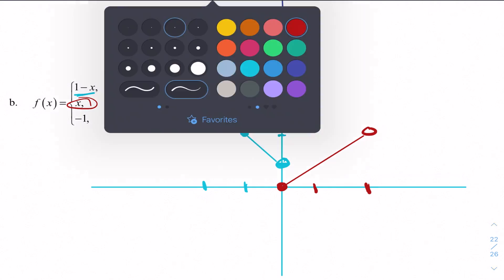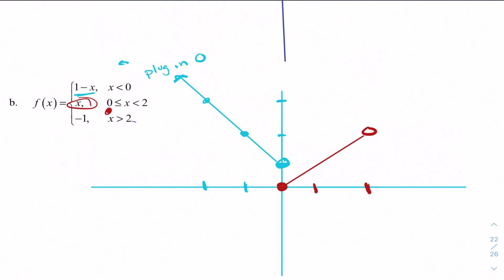Lastly, let's do a different color, purple. To the right of 2, I am negative 1. So I go down to negative 1. I have an open circle and I am the same value going off towards infinity. So piecewise function graph in pieces. That's all.